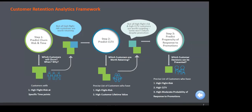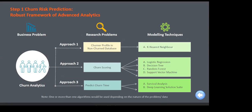Coming to churn analytics — this one business problem can be attacked through multiple approaches, each solved through a number of modeling techniques. It is not plug-and-play of one model for one problem. The first approach is finding the churner profile in the non-churn database using look-alike modeling — KNN or any look-alike algorithm. The second approach is churn scoring — finding the probability of the churn score. The third approach is predicting churn time using survival analysis or deep learning.